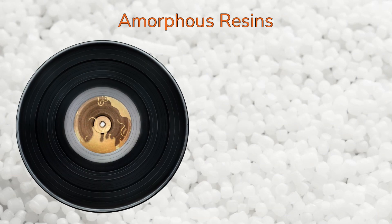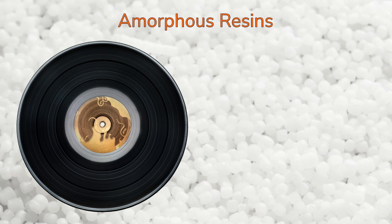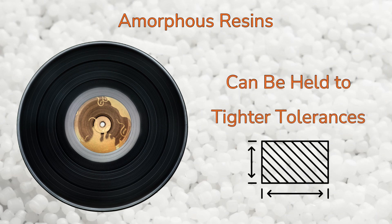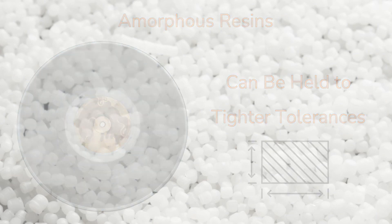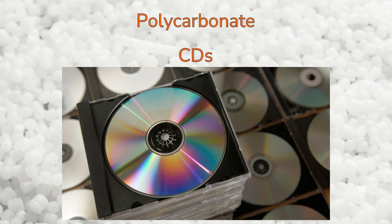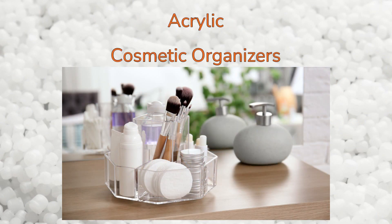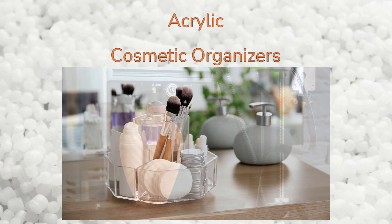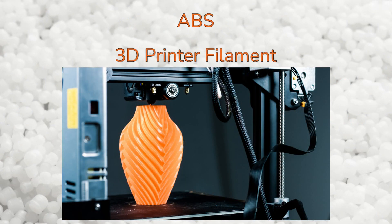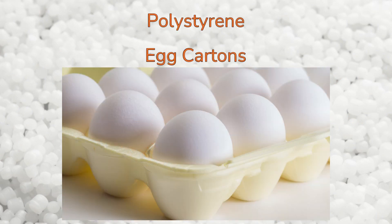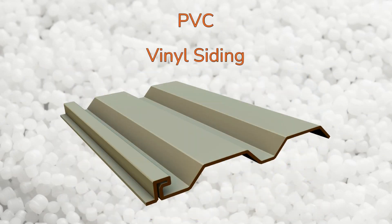Amorphous resins also exhibit lower mold shrinkage, so parts made from amorphous resins can be held to tighter tolerances. Examples include polycarbonate, acrylic, ABS, polystyrene, and PVC.